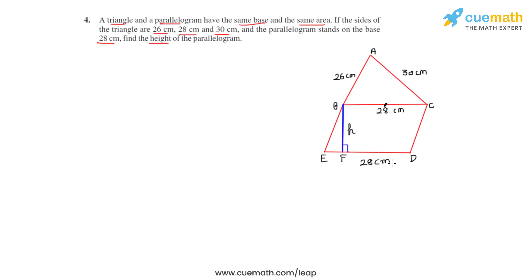Now, we will have to find the area of triangle ABC so that it can be equated to the area of parallelogram BEDC. So we make use of Heron's formula as the side lengths for the triangle ABC are given, but its height is not given.